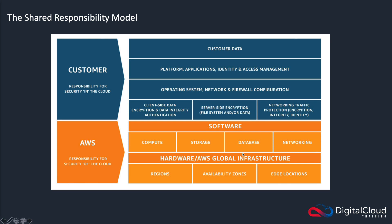For databases, it depends on the database. For instance, DynamoDB is a database where you provision a table, and you're responsible for the data you put in that table. But the underlying database and the hardware it runs on is all taken care of by AWS. The physical networking equipment and the routing and switching software on top of it are run by AWS.